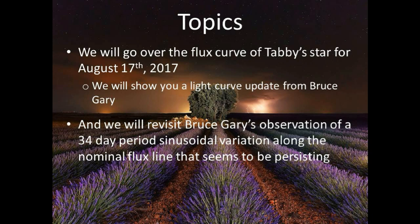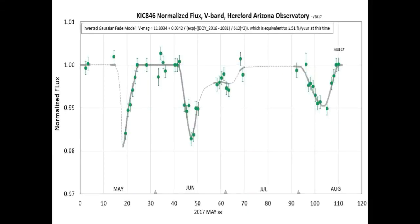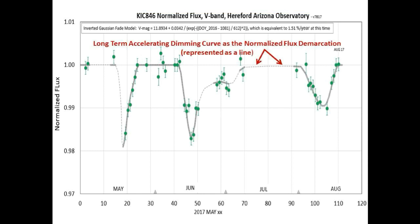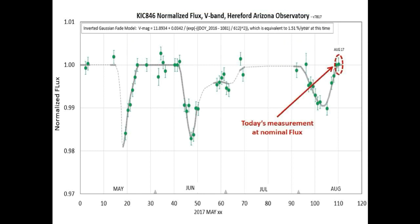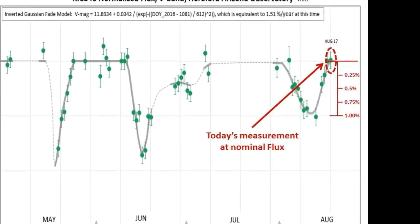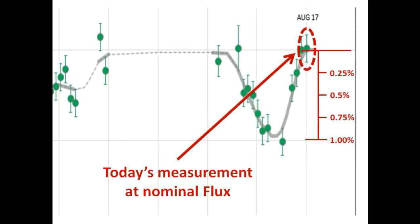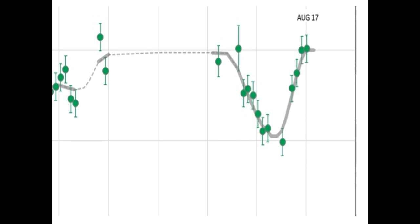Our second topic is we will revisit Bruce Gary's observation of a 34-day period sinusoidal variation along the nominal flux line that seems to be persisting. This is the normalized light curve of Tabby Star taken in the V-band. The normalized flux line is the long-term accelerating dimming curve, and today's measurement circled in red shows that we are now back at the nominal flux line. It should be noted that we have had a transient dip not shown on this light curve that was caught on two of Tabby's team's telescopes, which fell one and a half percent below the lowest point on this light curve.